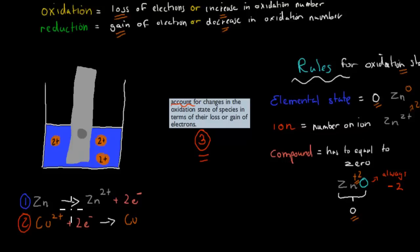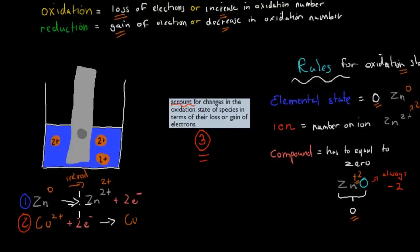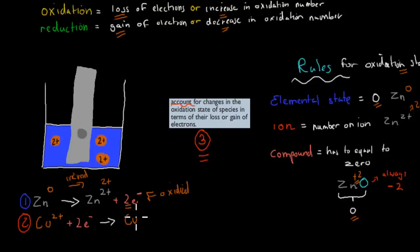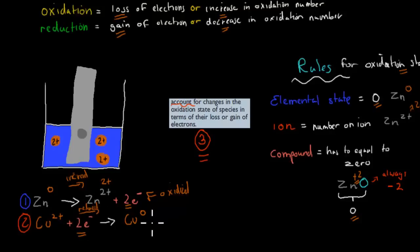Zinc is elemental, so its oxidation state is zero. Zinc goes from elemental zero to zinc ion 2+, meaning it has increased its oxidation number — it has lost two electrons, so it has been oxidized. Copper has gone from copper 2+ to elemental copper, which is zero. It has reduced its oxidation state from 2+ to zero, or in other words it has gained two electrons — and that is reduction.